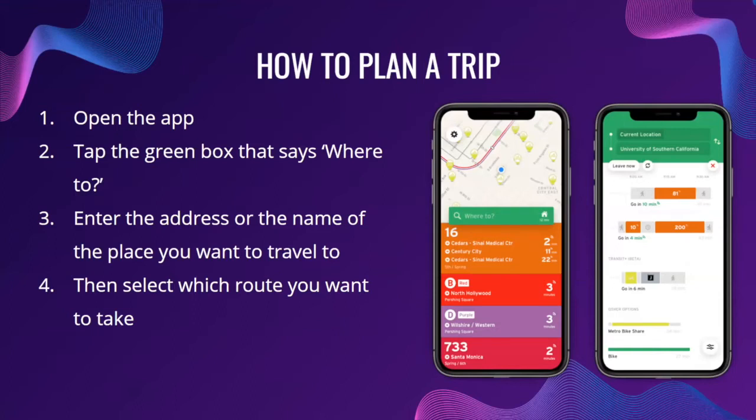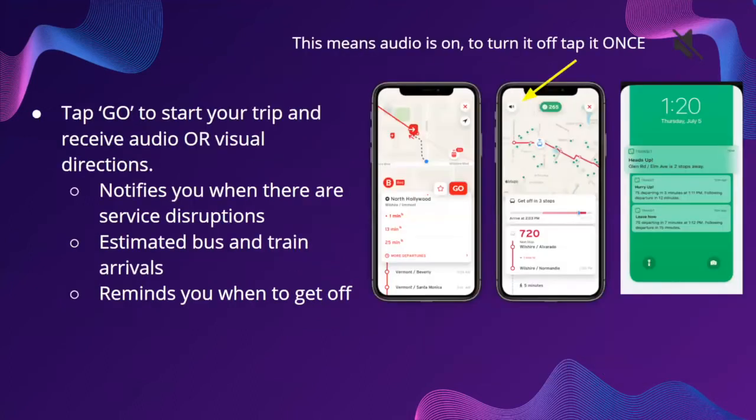In the 'Where to' box you can type in the address, the location, or the name of the place you want to go to, and then you can select which route you want to take. To get to your destination, they have a Go mode which you can enter by tapping the Go button on the screen.